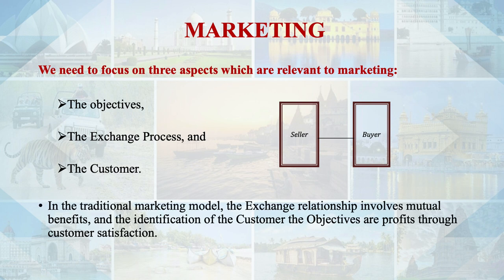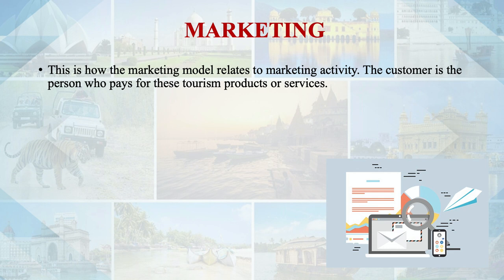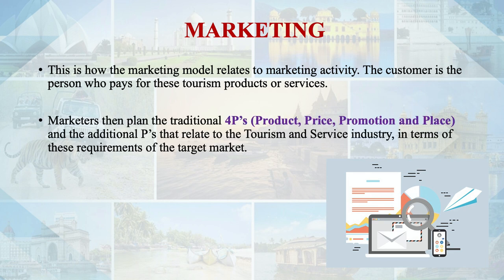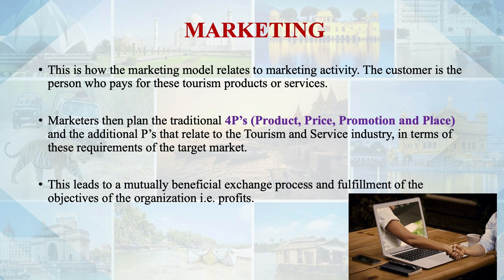In the traditional marketing model, the exchange relationship involves mutual benefits, and the identification of the customer and objectives are profit through customer satisfaction. The customer is the person who pays for products or tourism products or services, and marketers then plan the traditional four Ps and additional Ps that relate to the tourism and service industries. This leads to a mutually beneficial exchange process and fulfillment of the objectives of the organization, like profits.